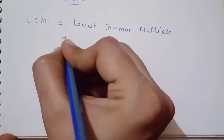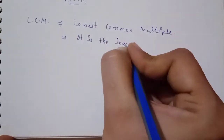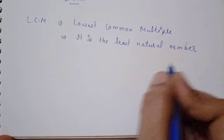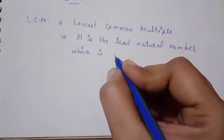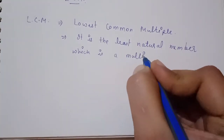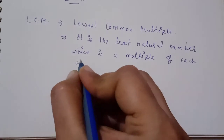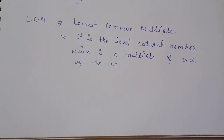LCM is the least natural number which is a multiple of each of the given numbers. So if you have 2, 3, 4 numbers, their least common multiple is known as the LCM. Now, how will we calculate it? The first method is the prime factorization method. Under this method, we always take the prime factorization of each number.